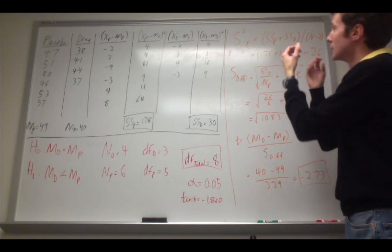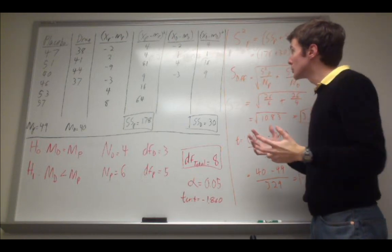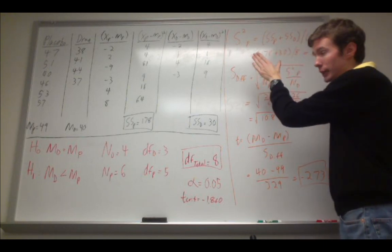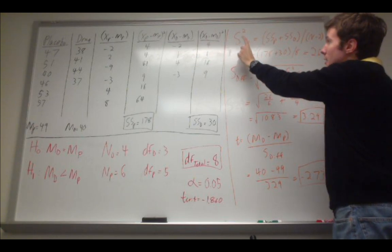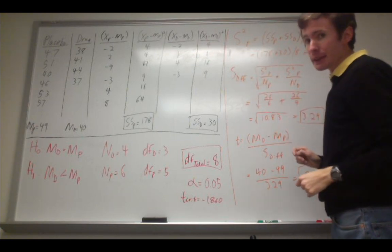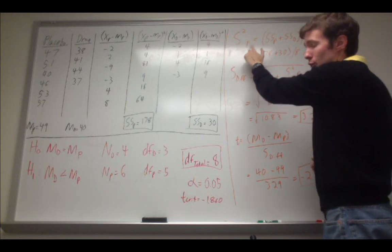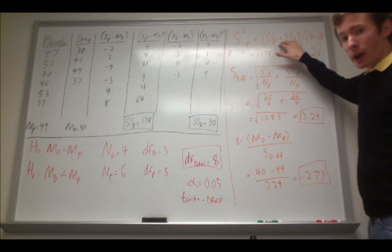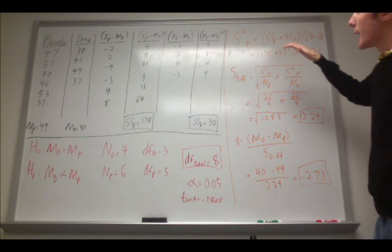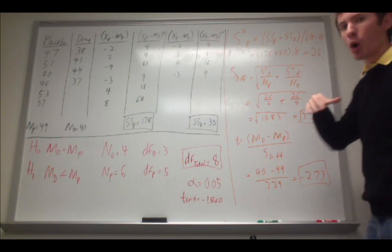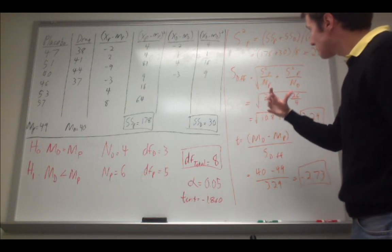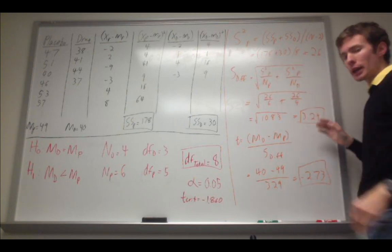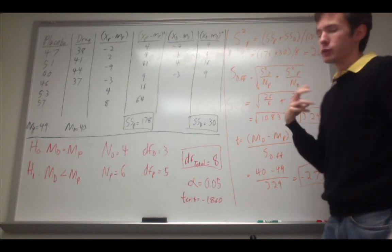Now all you need to do is take an estimate of the variance between these two groups. To do that, we take a weighted average of the variance called the pooled variance, notated here as s-squared subscript p — don't get that confused with placebo, this stands for pooled. We take the sum of squares, add them up across both groups, and divide by the total degrees of freedom, or n minus 2. We insert those numbers: 178 plus 30, divide by 8, and we get a pooled variance of 26.